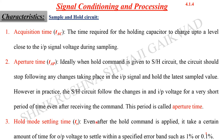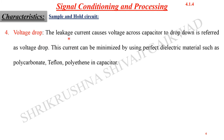The third characteristic is the hold mode settling time: even after the hold command is applied, it takes a certain amount of time for the output voltage to settle within a specified error band, such as 1% or 0.1%. This is because things are not instantaneous — it takes some time, though not noticeable, in the millisecond or microsecond range, to act on the given command. The next characteristic is voltage droop: leakage current causes the voltage across the capacitor to drop, referred to as voltage droop. This can be minimized by using a perfect dielectric material such as polycarbonate, Teflon, or polyethylene in the capacitor.